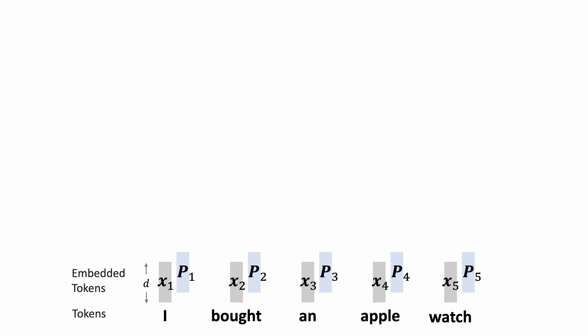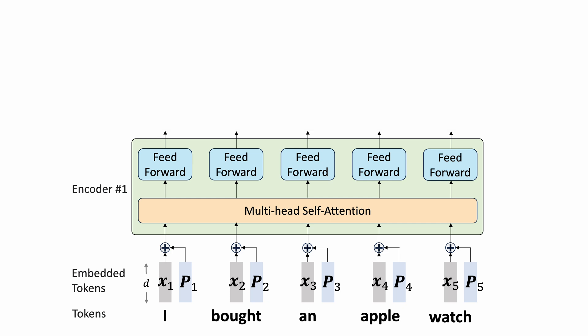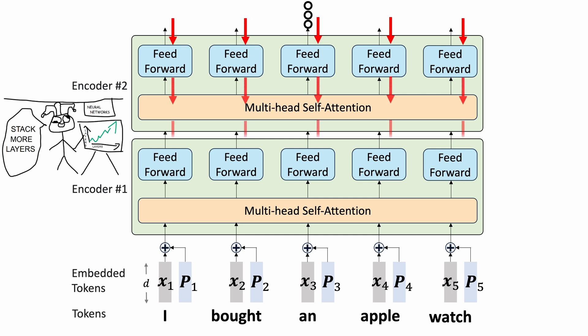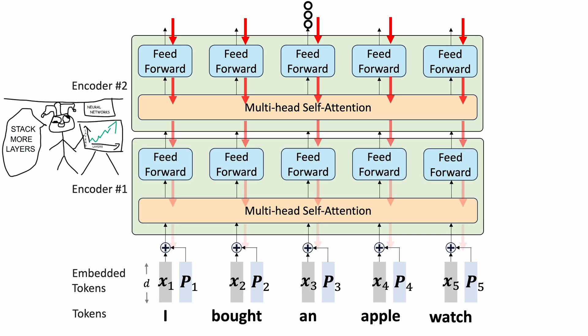So we inject the position information into the embedded token by simple addition. We can easily stack these encoders to build a deeper model. But this poses significant challenges for training. For example, the gradient magnitude may become too small to update model parameters effectively. To improve the training, we first add residual connections.